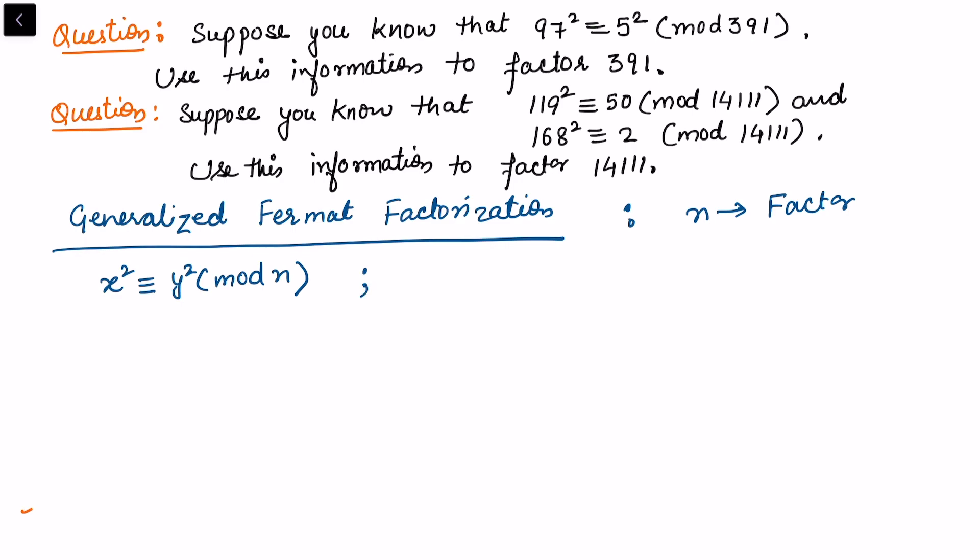We also have this condition that x is not congruent to plus or minus y mod n. Then we proved in my last video that if these two conditions hold, then gcd(x - y, n) will give me a non-trivial factor of n.